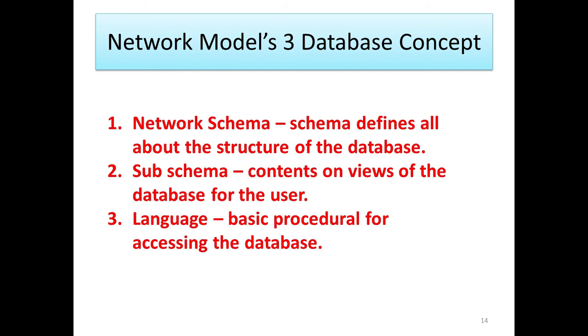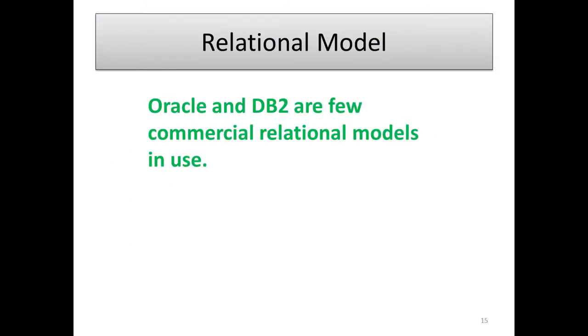And then, network model has three database concepts. Normally, network model in this three database concepts are, first one network schema, second one sub schema, third one language. What is network schema? The schema defines all about the structure of the database. Sub schema, sub schema contents on views of the database for the user. Language, basic criteria for the accessing the database. These are the three database concepts.